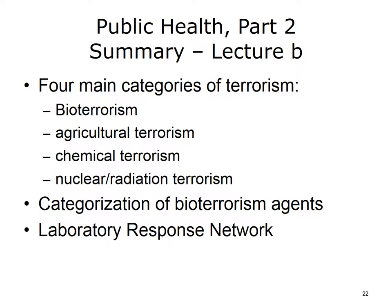This concludes Lecture B of Public Health, Part 2. In summary, public health response is discussed for the four main categories of terrorism: bioterrorism, agricultural terrorism, chemical terrorism, and nuclear or radiation terrorism. Categorization of bioterrorism agents and the Laboratory Response Network are also discussed.